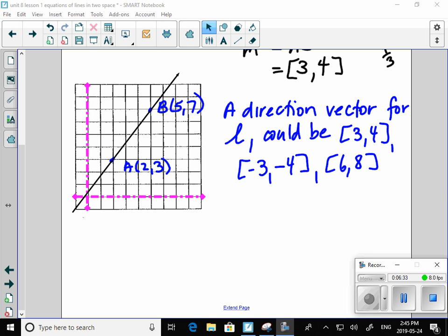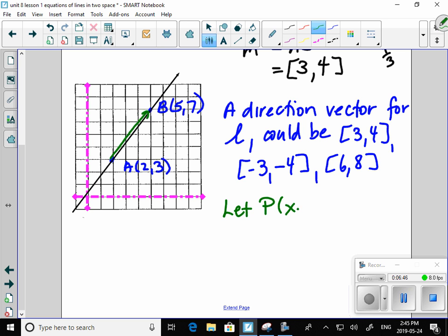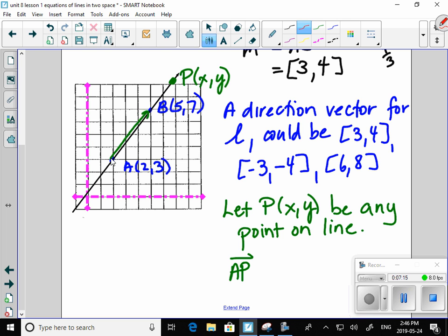For our line through AB, it makes sense to us that we have a direction vector AB or some scalar multiple of that as well. So if I have a point P, any point on the line, let's put P right here. It doesn't matter, P can be anywhere. So if I've got P anywhere on the line, then it has to be true that a vector from A to P has to be some scalar multiple of the direction vector. So mine looks like it's one and a half times the direction vector. It has to be some scalar multiple.